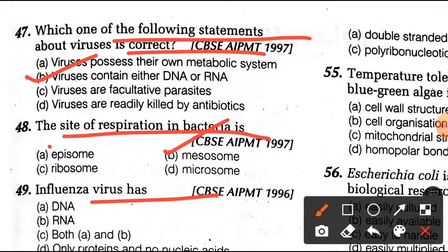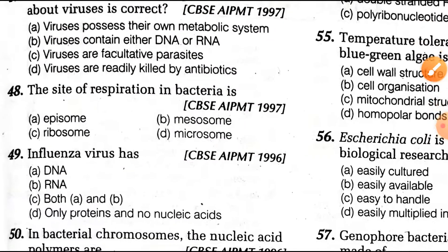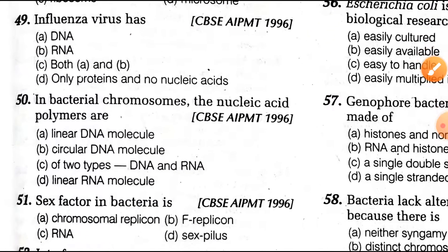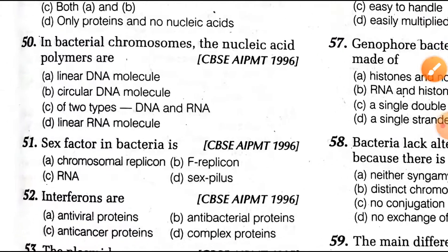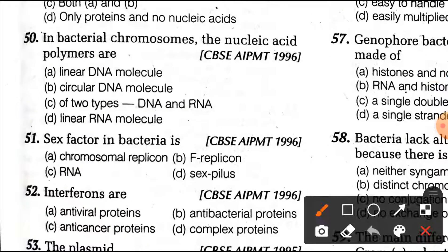Question number 49: influenza viruses have RNA as their genetic material. Question number 50: in bacterial chromosomes, the bacterial chromosome is always circular DNA.